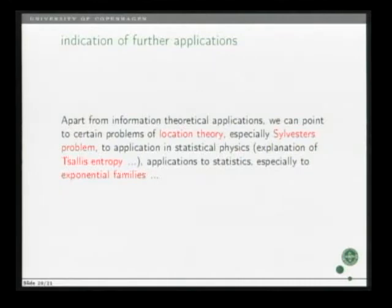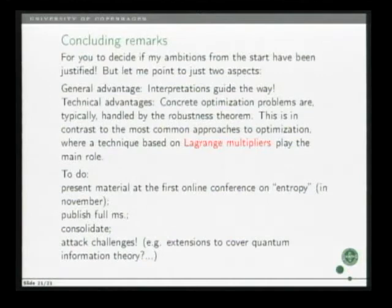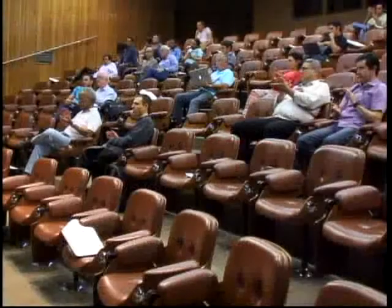Now, there are further applications. Perhaps the most interesting, what actually triggered a lot of my study was to explain Tsallis entropy. You can do that via this interaction kind of concept, but I will not take time to go into that. Now, concluding remarks, well, you have to decide if my ambitious goals could be fulfilled, if there's a possibility, but I'll point to two things. There's a general advantage: interpretations guide the way, and the technical advantage via this robustness theory. It's not needed to avoid Lagrange multipliers, but you can under this theory, and this leads to more natural results. Now, there's something I want to do, but I better stop here. Thank you.